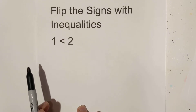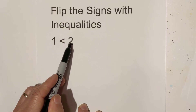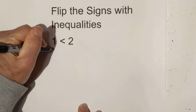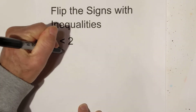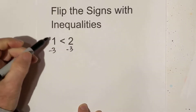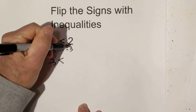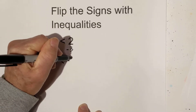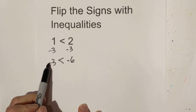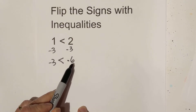Let's begin with this example. We have 1 is less than 2, which is true. However, if we multiply both sides by negative 3, we get the following: negative 3 times 1 is negative 3, less than negative 3 times 2 is negative 6.